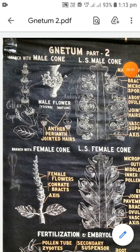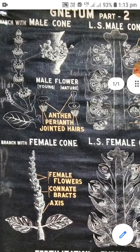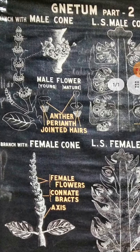Now we see the presentation of reproductive characters or reproductive organs. First we see the description of male cone. Male flowers are present in 3 to 6 whorls in each whorl on the floral axis at the terminal position of stem.